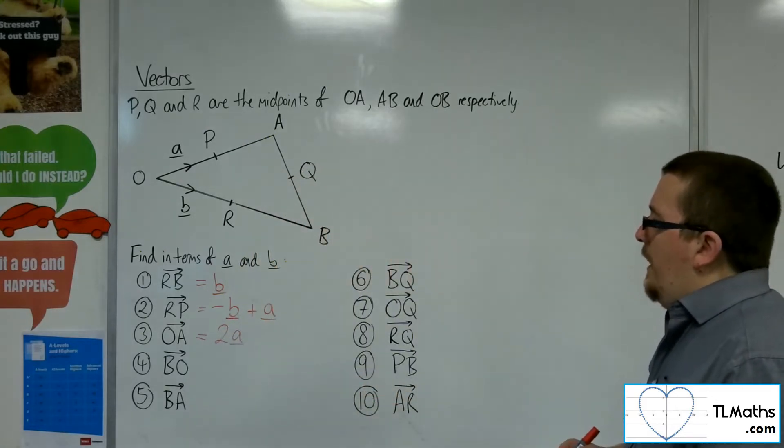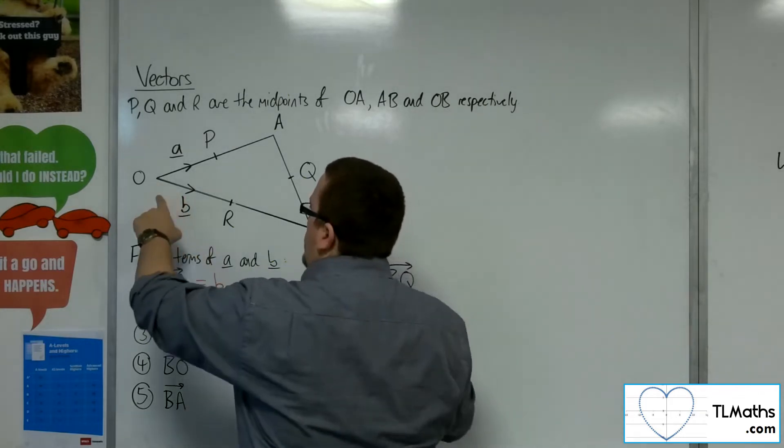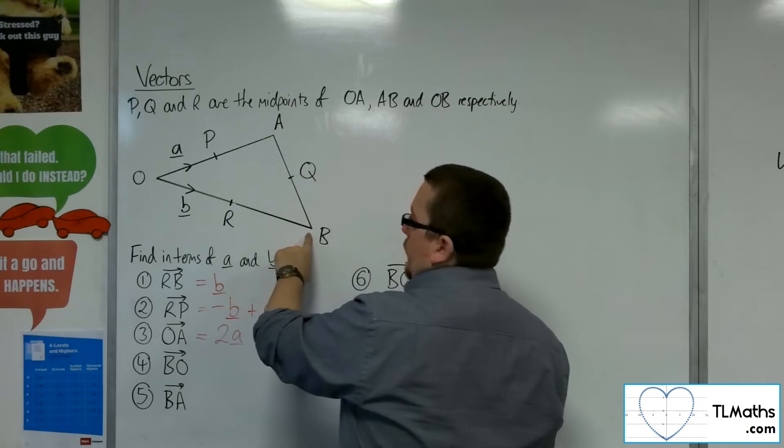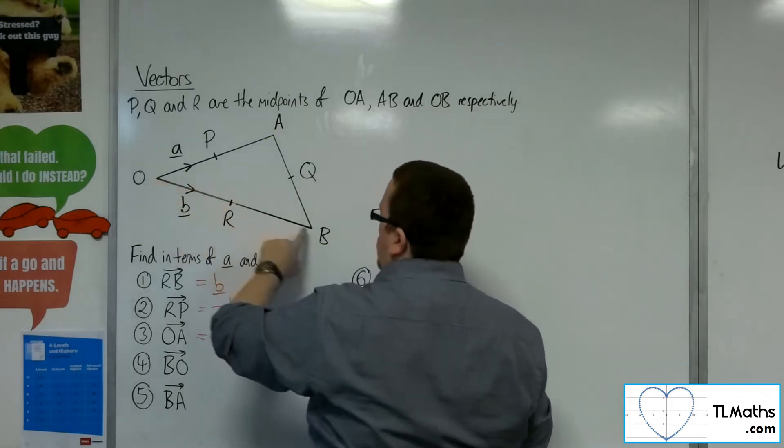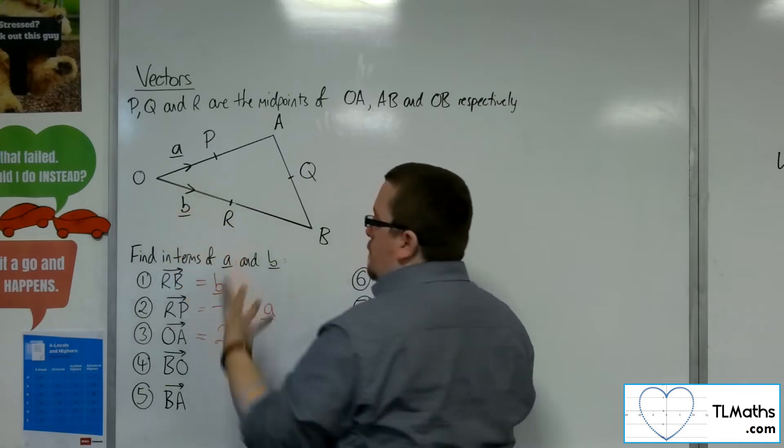Now how about B to O? Well, B to O, I know that O to R is B, I know that R to B is B, so to get from O to B is 2B. So to get from B to O would be minus 2B.